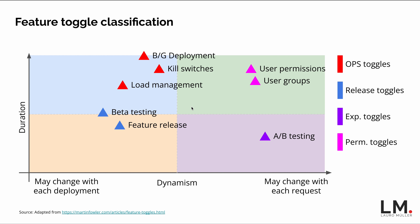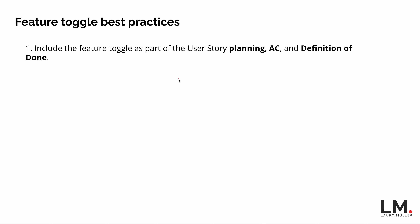That's a rough distribution — not absolute truth. The key takeaway is that there are different natures of toggles, and depending on the nature we may want to handle them differently. Now for best practices: first, feature toggles should not be an afterthought. They should be part of user story planning, acceptance criteria, and the definition of done — including removing the feature toggle once the feature is complete.